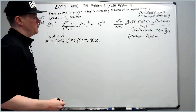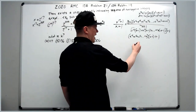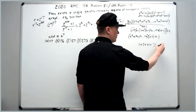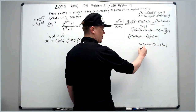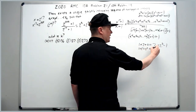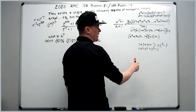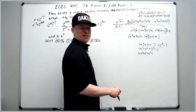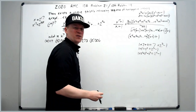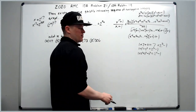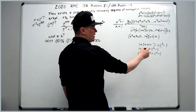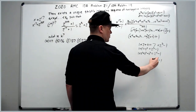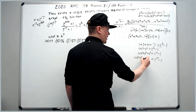Now we use a key property of powers of 2. For example, 1 + 2 + 4 = 7 = 2³ − 1. More generally, 1 + 2¹ + 2² + ... + 2¹⁶ = 2¹⁷ − 1. So (x − 1), which represents 2¹⁷ − 1, equals 1 + 2¹ + 2² + ... + 2¹⁶.